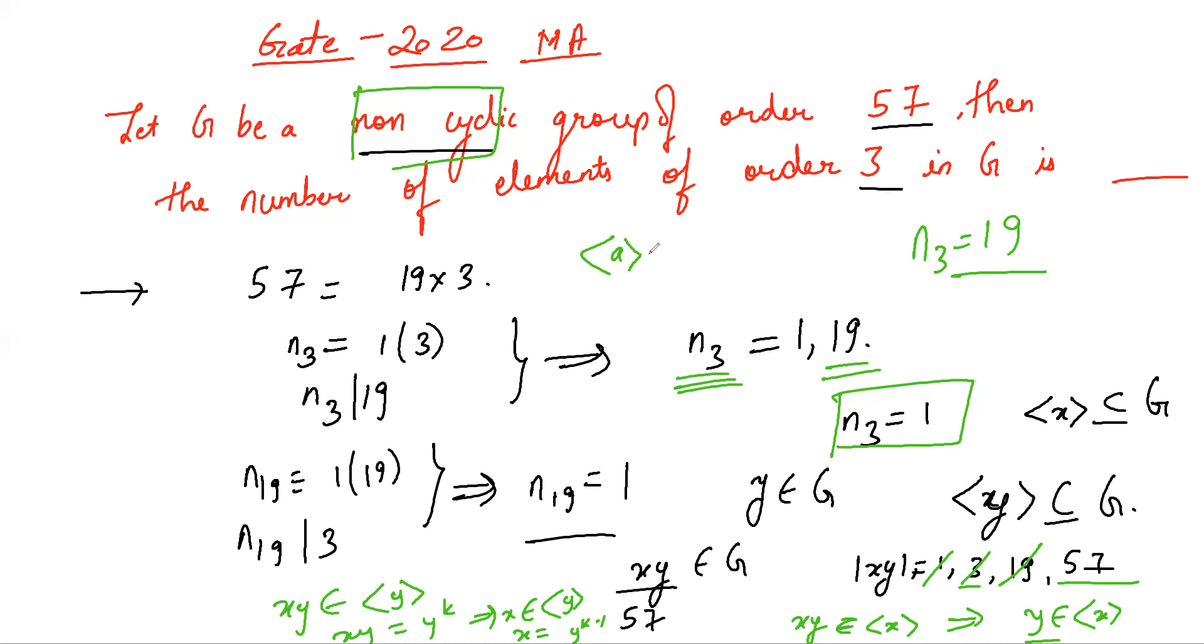That is, if A is a group of order 3 containing e, a, and a squared, then order of a equals order of a squared equals 3. So there are 19 times 2 elements of order 3 in the group, which is 38.